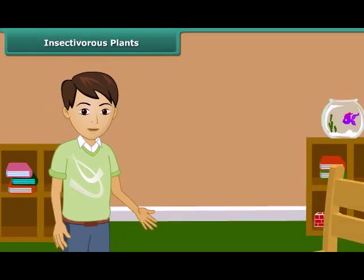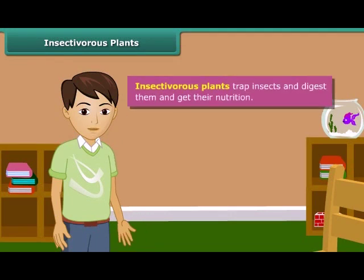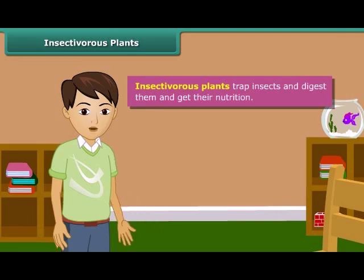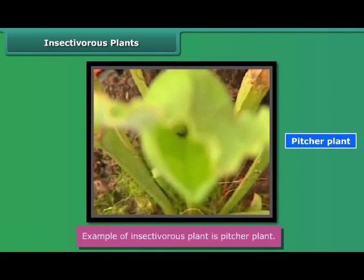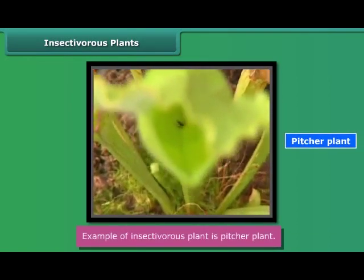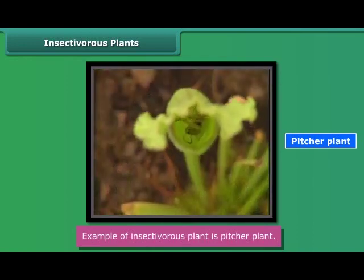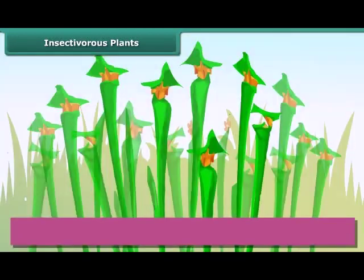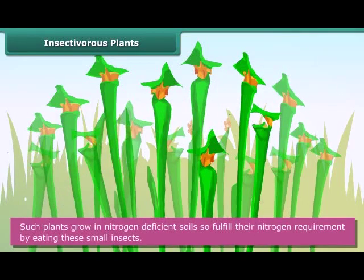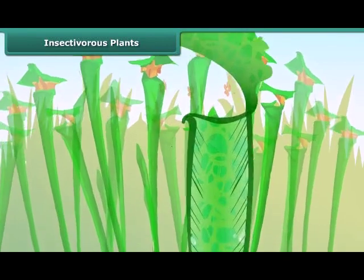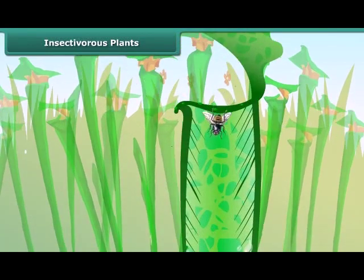The next category is insectivorous plants. There are a few plants which can trap insects, digest them, and get nutrition — for example, pitcher plants. These plants can synthesize their own food by photosynthesis, but they grow in nitrogen-deficient soils. So such plants fulfill their nitrogen requirement by eating small insects and hence are called insectivorous plants.